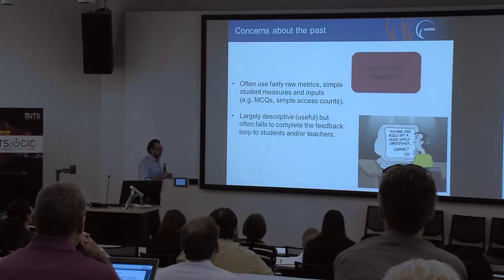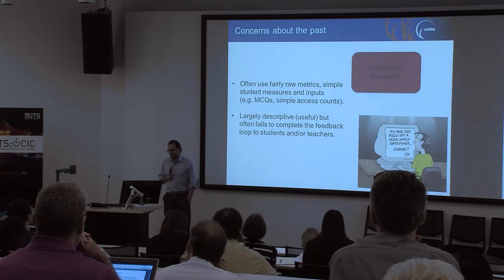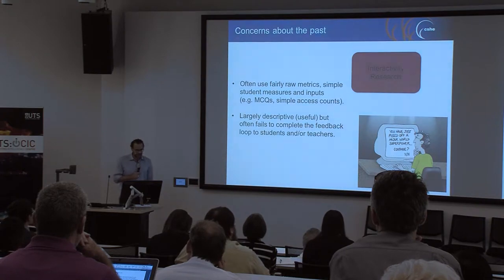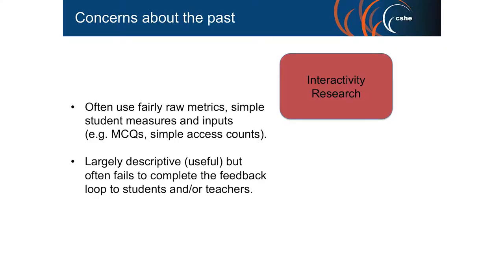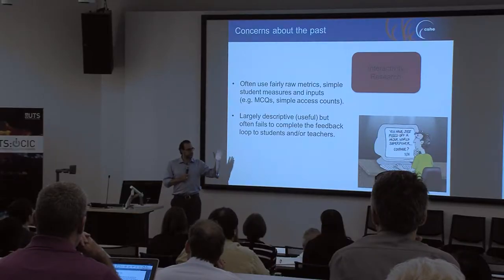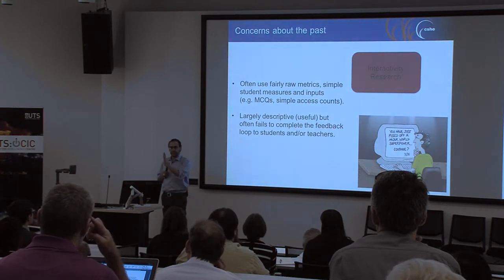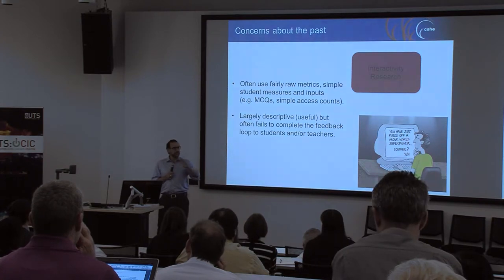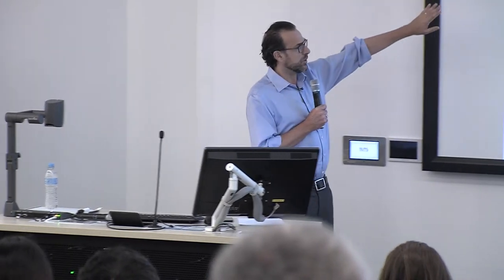If you look critically at the interactivity research tradition, there are some criticisms of it. Often we're using fairly simple raw metrics — myself included — multiple choice questions, simple frequency counts. Everybody would be aware of analytics work that shows a semester of students from February through to June with peaks and troughs associated with assessment and holidays. We find that students turn up to class during semester, don't turn up during holidays, and cram before exams. We know this; analytics provides a verification of this but doesn't move us much further. It's useful but doesn't complete the loop to students and teachers.